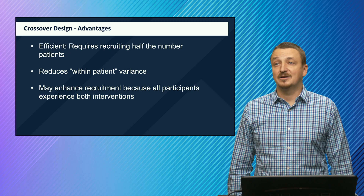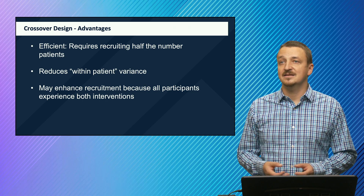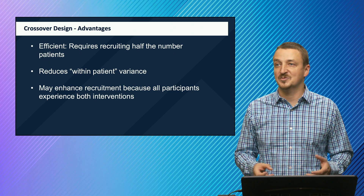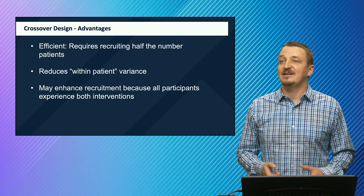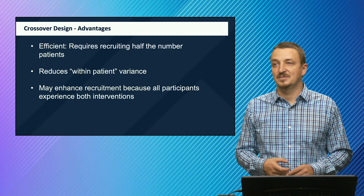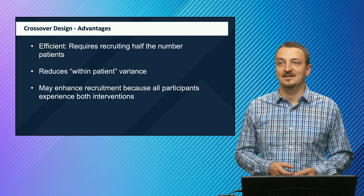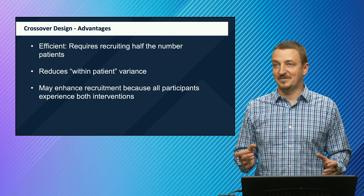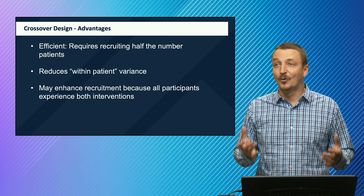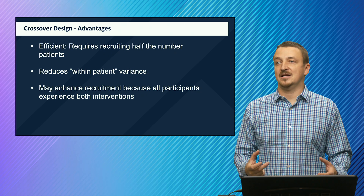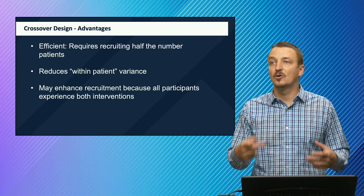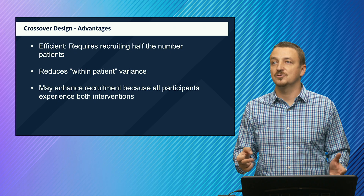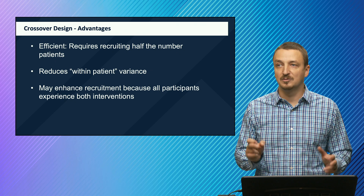What are the advantages of a crossover design? It is efficient — it requires recruiting half the number of patients because every patient will be enrolled in both arms, just in a different sequence. It also reduces within-patient variance because every patient serves in both arms of the study. It may also enhance recruitment because all participants experience both interventions. This is especially important when you have a very promising new drug as the main motivation for enrollment — in such a design you can guarantee that everybody will receive both drugs, just in a different order.